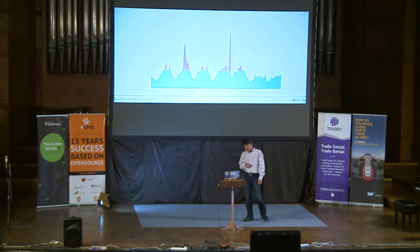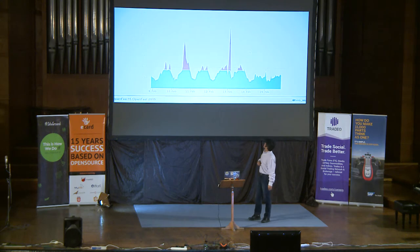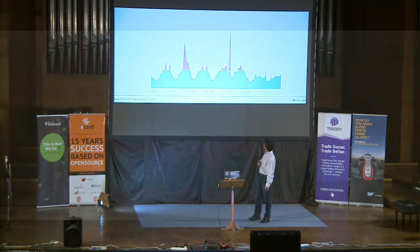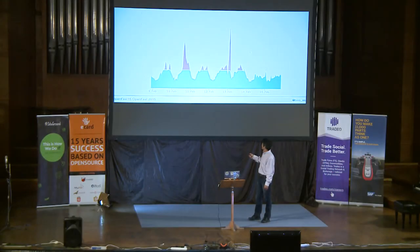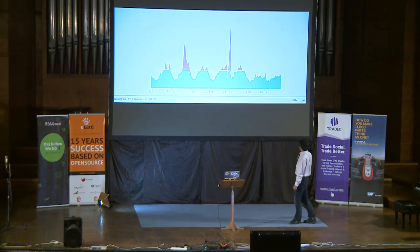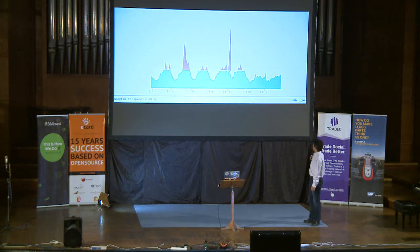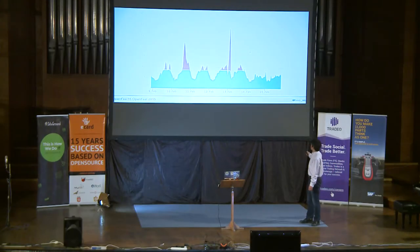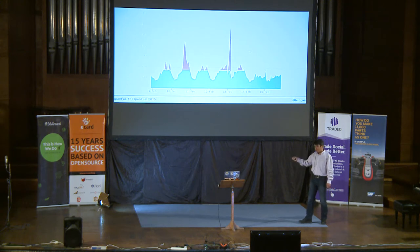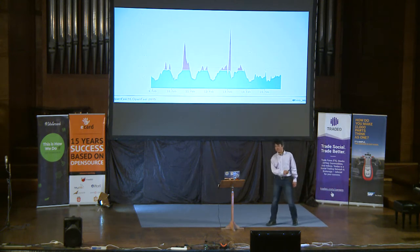That's not the end of the story — this started happening. We have a graph: the green part shows how many jobs are running on Travis CI, this is earlier this year around February 9th to 11th, about a week. The red part shows jobs that are waiting to run. The red is bad for the user experience — you push code to GitHub, you expect Travis to run your build immediately, and it doesn't happen. This is a problem.